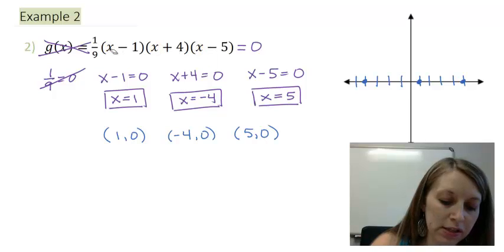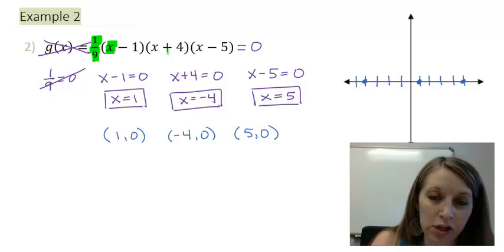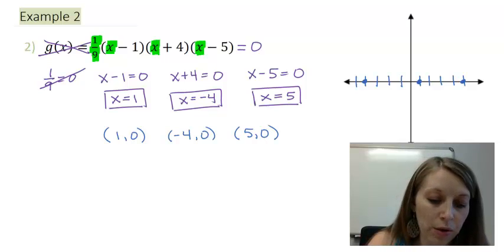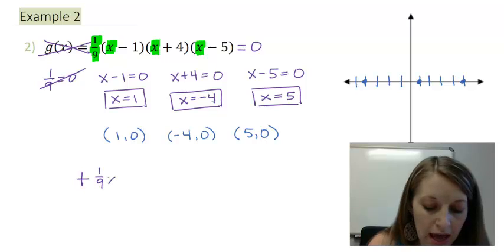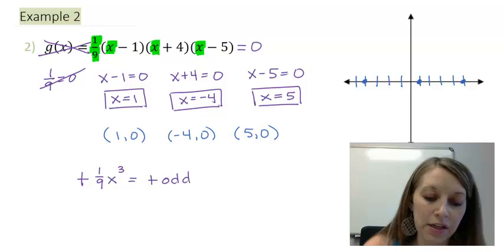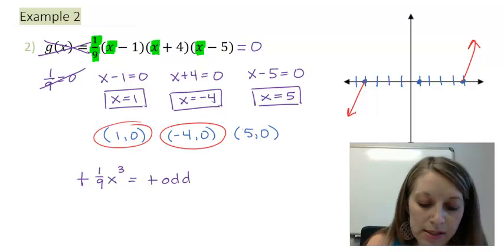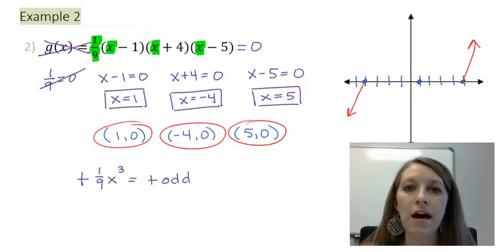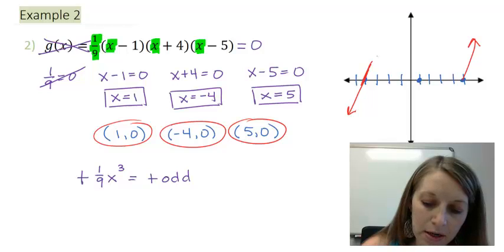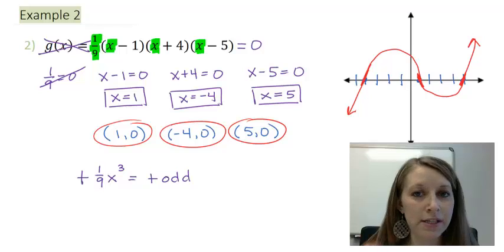To figure out the end behavior, I look at all the leading terms. There's a positive constant, positive x to the first power, and the same for the others. Multiplying all of those, the leading term would be positive (1/9)x³ — a positive odd. Odd-degree goes in opposite directions: left goes down, right goes up. Each intercept has multiplicity 1, so the graph crosses through the x-axis at each point — a rough sketch showing three crossings.